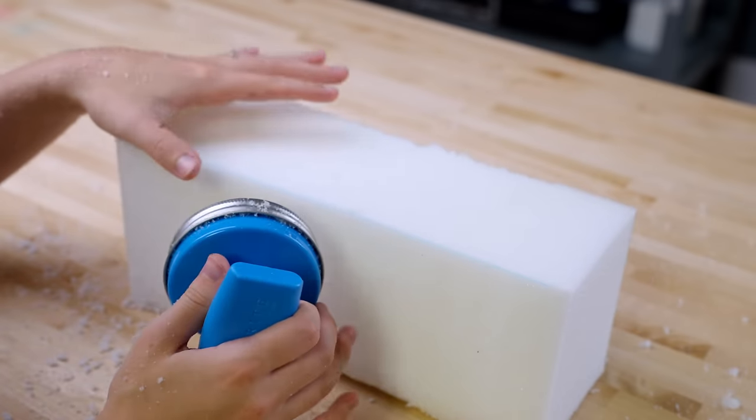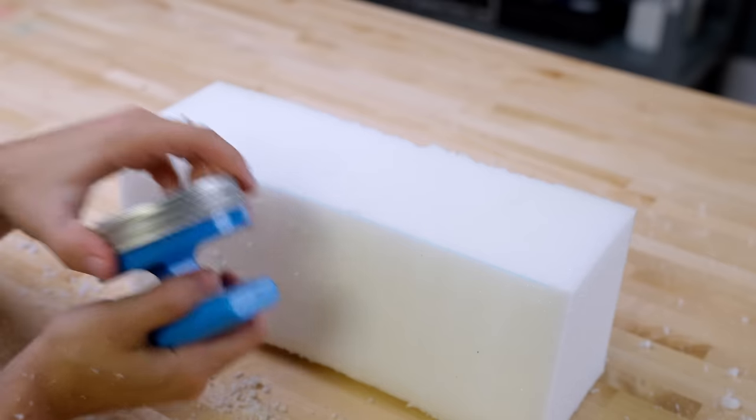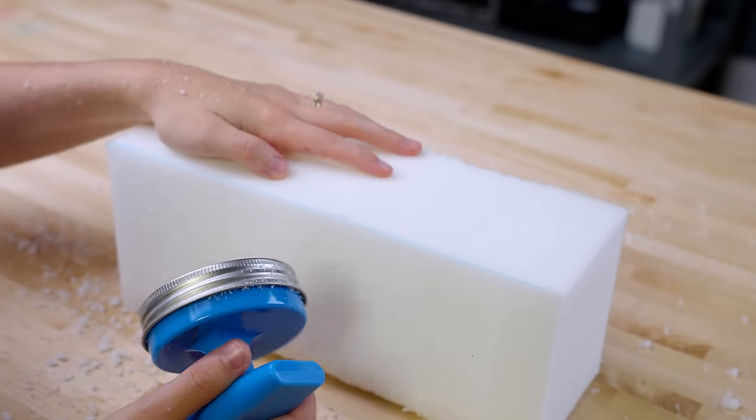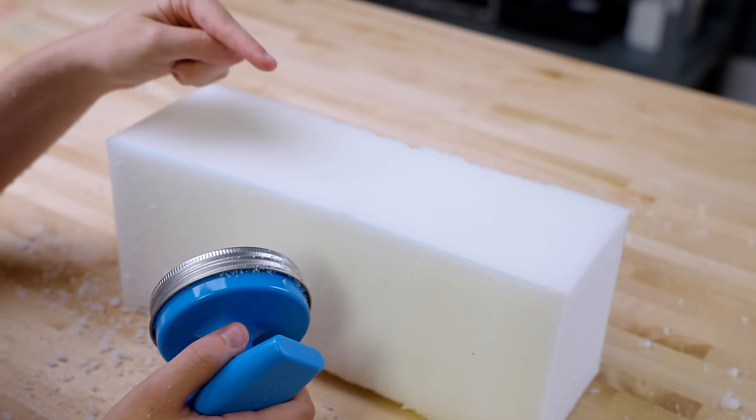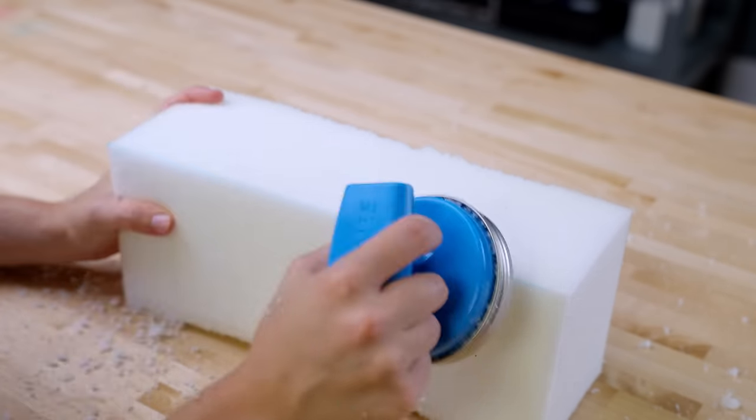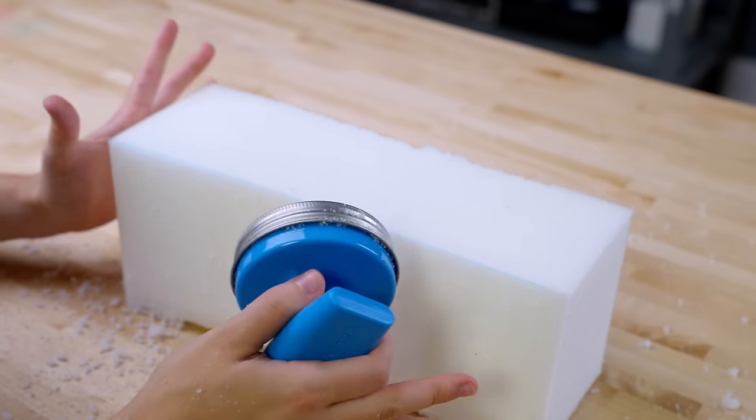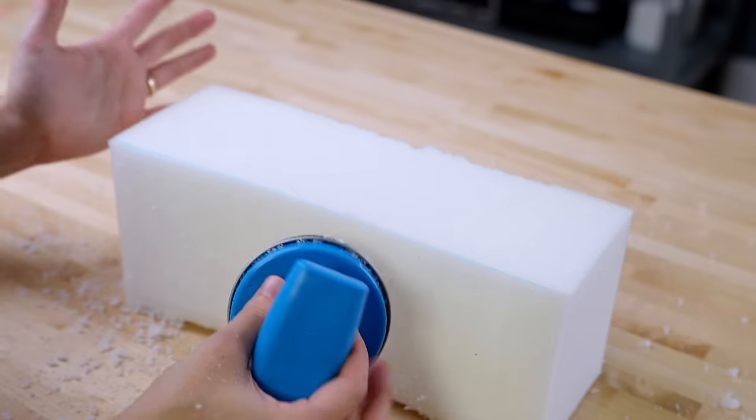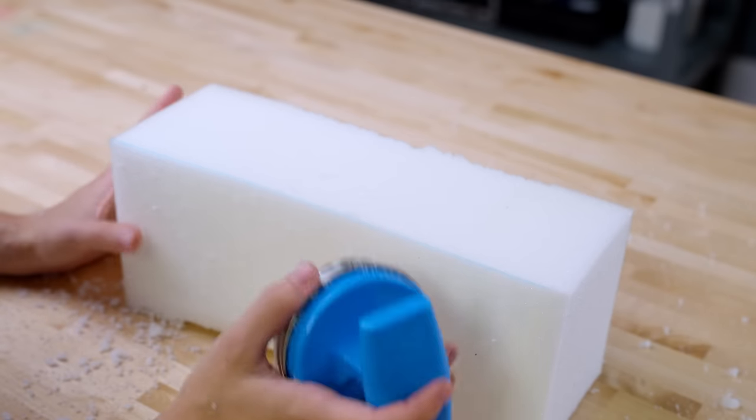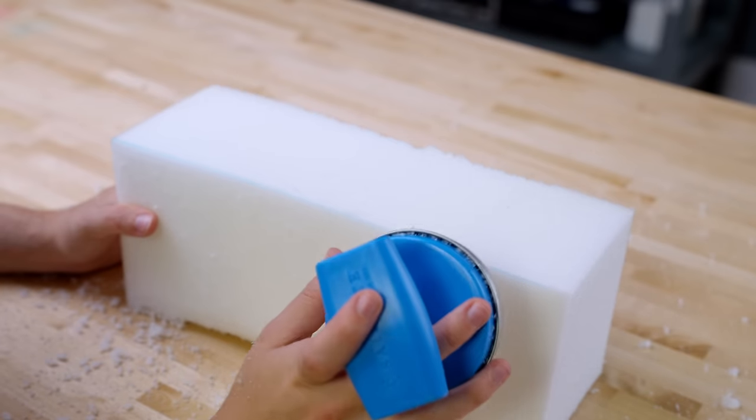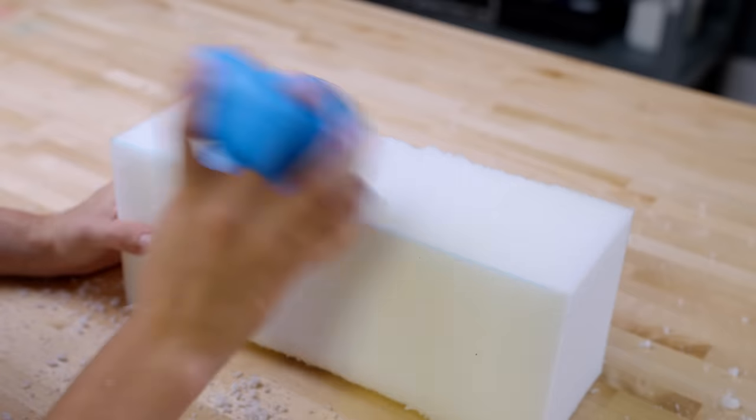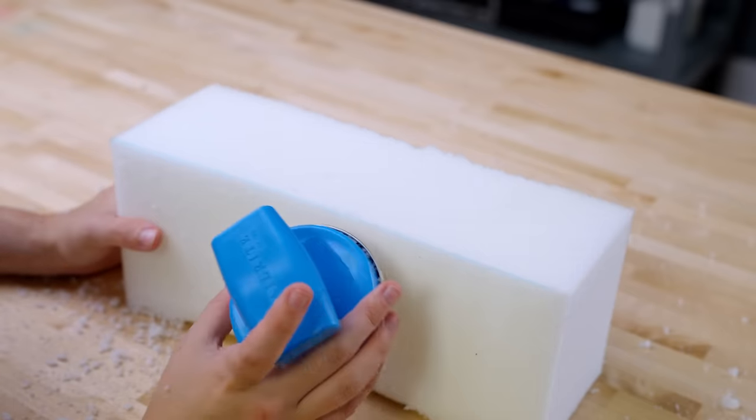Before we get into shaping our foam, we're just going to teach you a few tricks to using this tool on a scrap piece of foam. Tip number one is that the harder you press, the more foam you're going to remove, and the lighter you press, the less you're going to remove. This is important to keep in mind as you're shaping it—use it lighter on sections that need more fine details and harder on bigger sections where you need to remove foam.